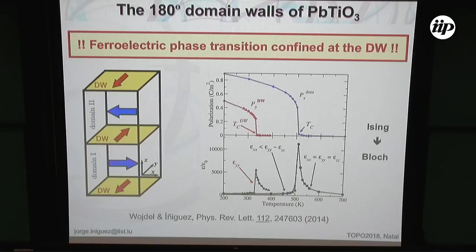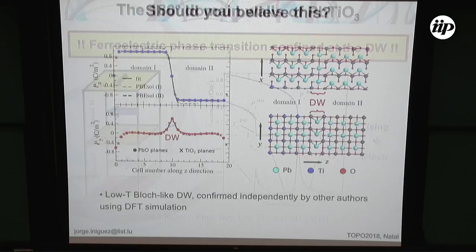When this happens, at high temperature in average the domain wall is in a high-symmetry configuration and looks a little bit like an Ising wall. Below this transition temperature, the domain wall looks like a Bloch wall where you have this kind of rotation of the polarization when you cross the wall.